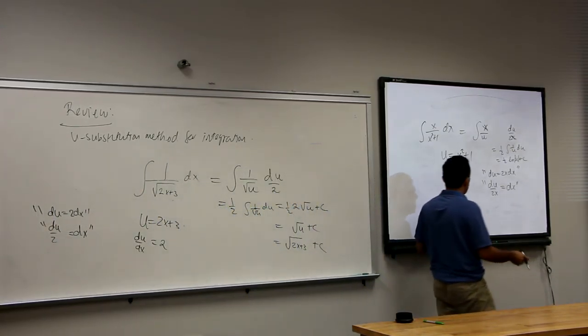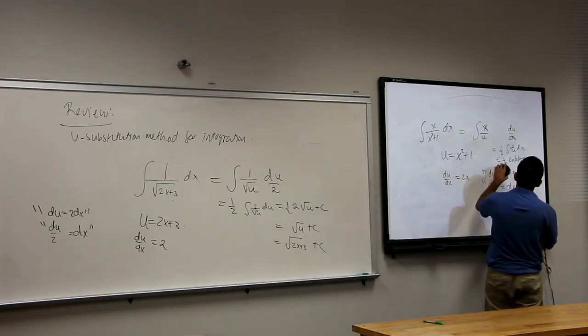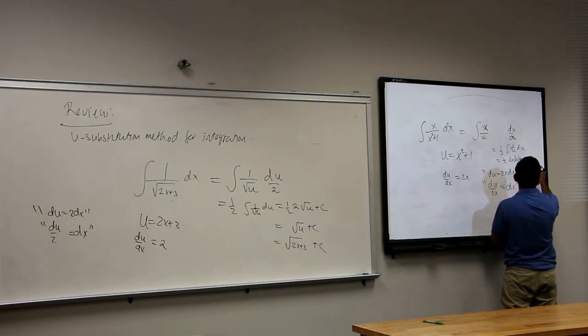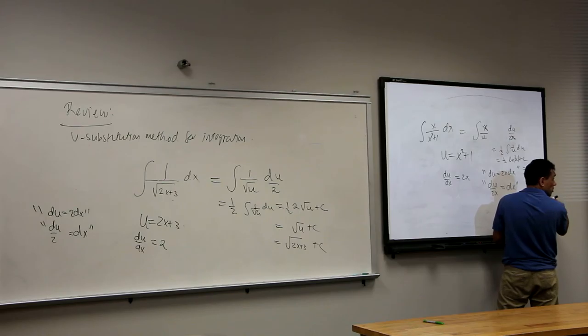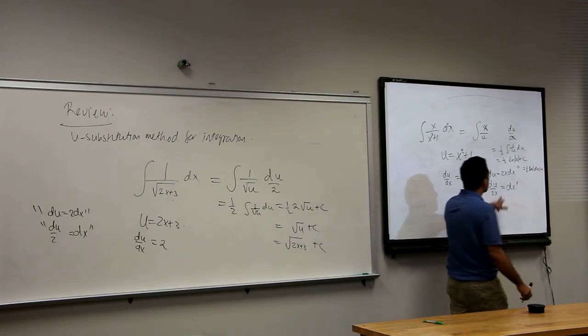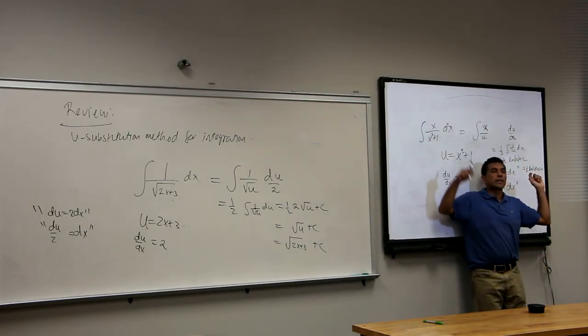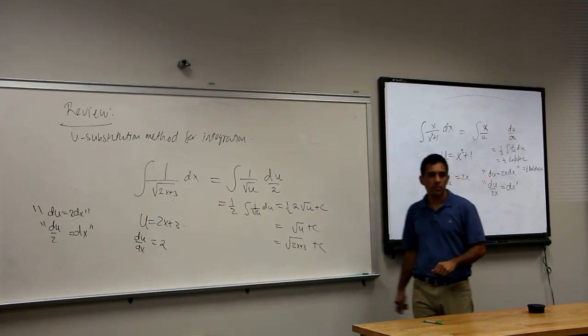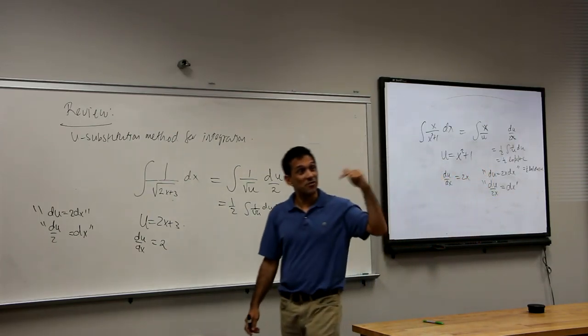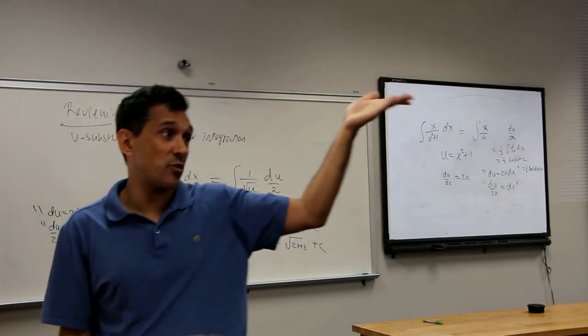And then you say to yourself, well, u is really x squared plus one. Now that's all possible. You can go home and check. And if I differentiate this, there you go. That is the point. What function differentiates, right? That's how you can check if your work is correct.